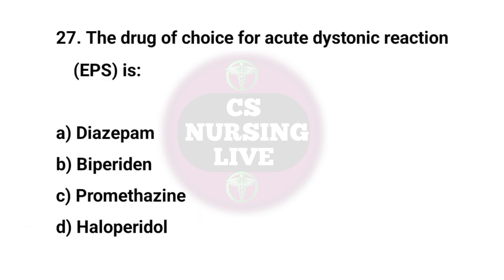Question No. 27. The drug of choice for acute dystonic reaction is? Right answer is B. Benztropine.